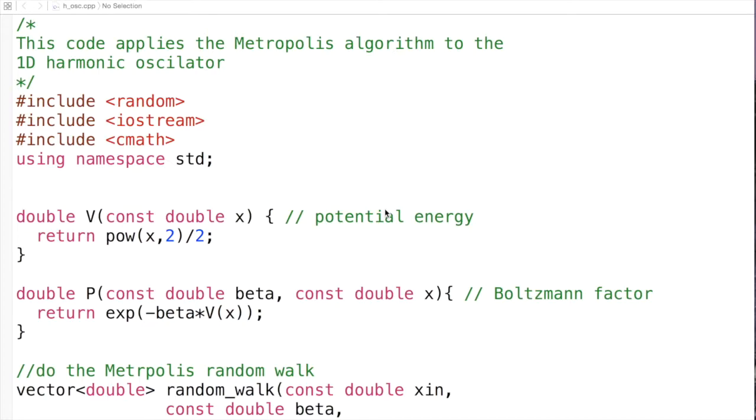We're going to need three header files: random, iostream, cmath, and work in a namespace standard.